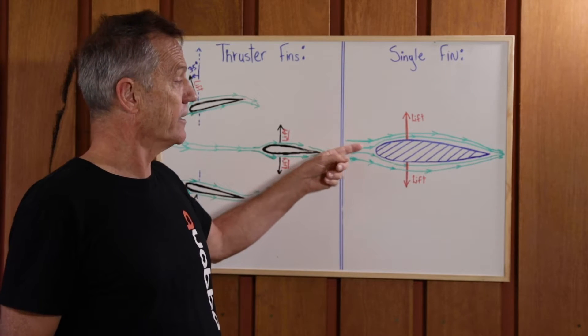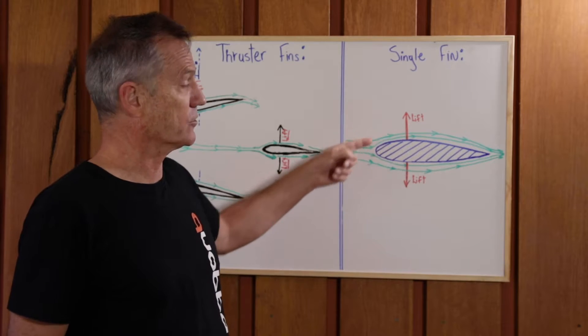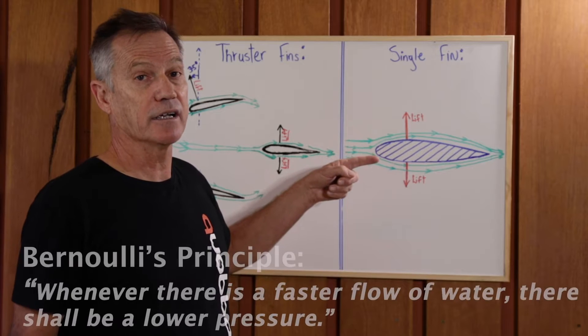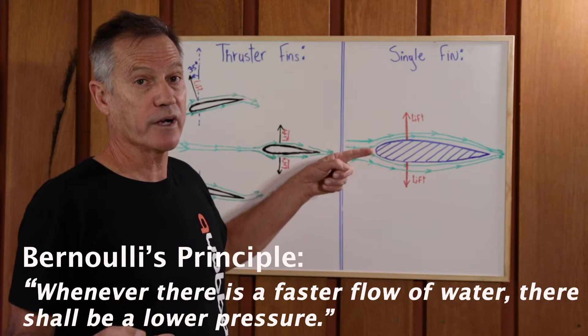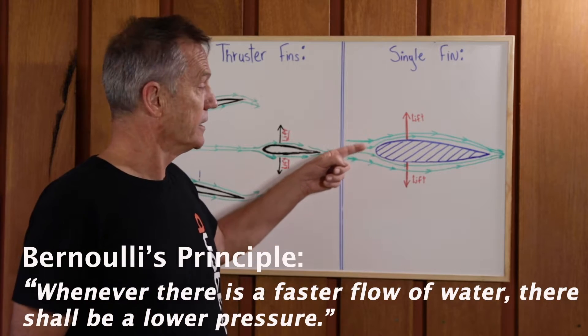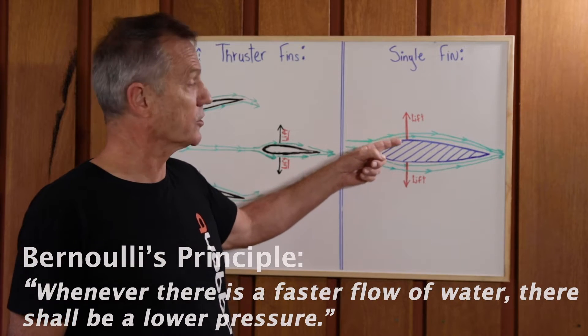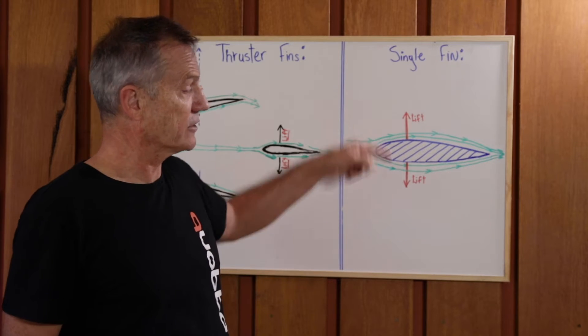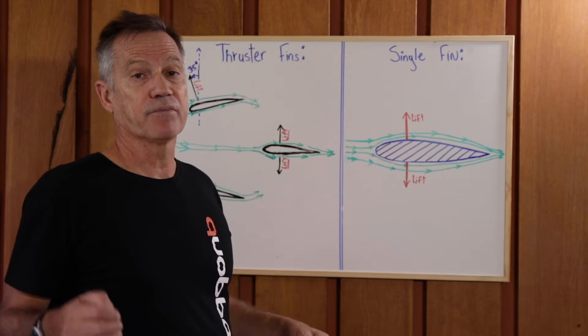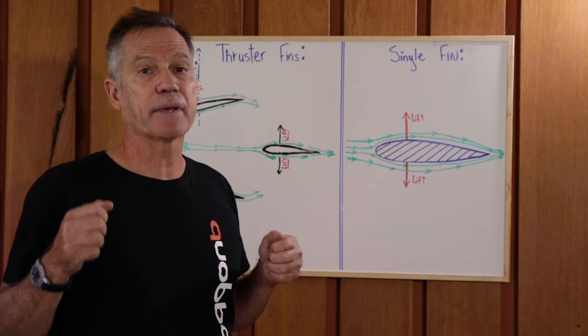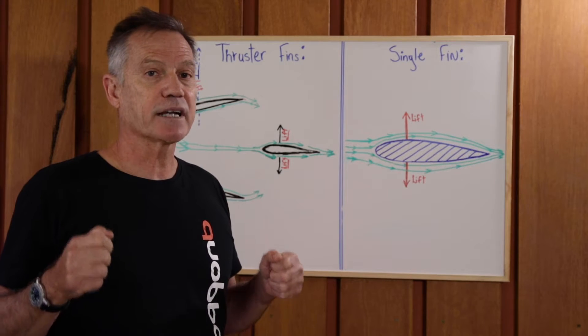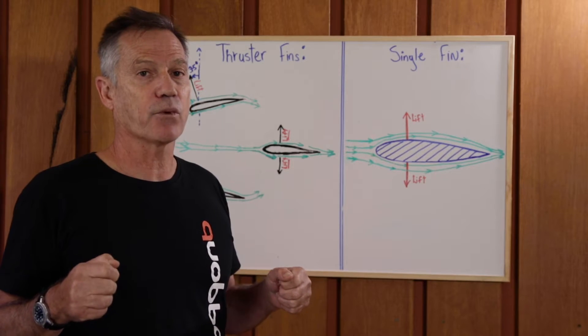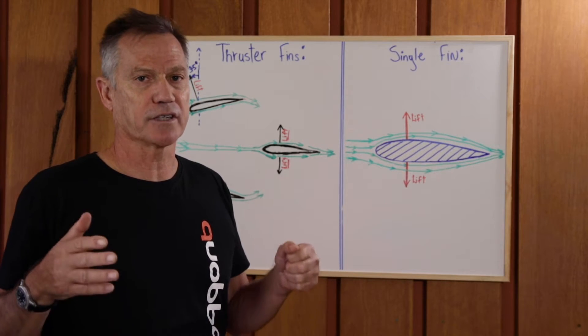You will get a lower pressure occurring at either side because the water is moving faster. And where there's faster moving water or fluid, there shall be a lower pressure. So therefore, this lower pressure causes the fin to want to lift, but it's lifting equally to the left and to the right, and that gives tremendous stability to the surfboard. It gives stability over and above forward thrust, and therefore the single fin is an instrument of stability.